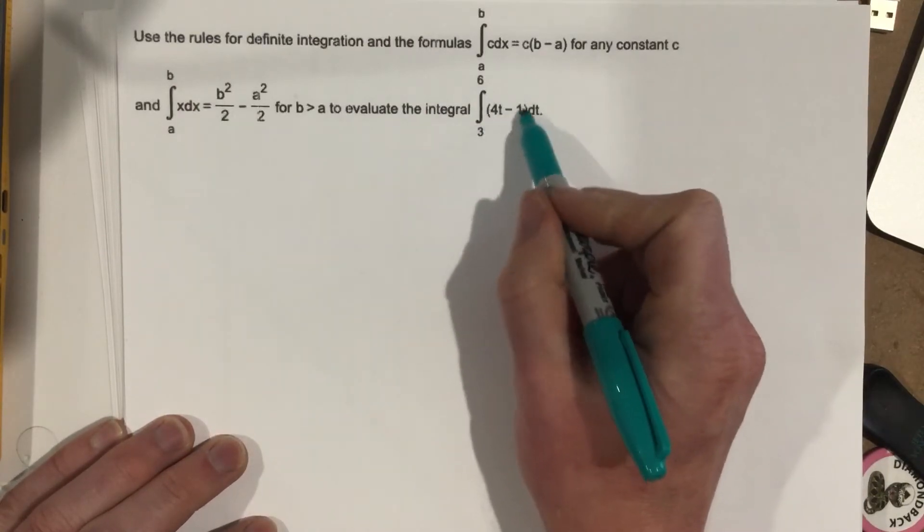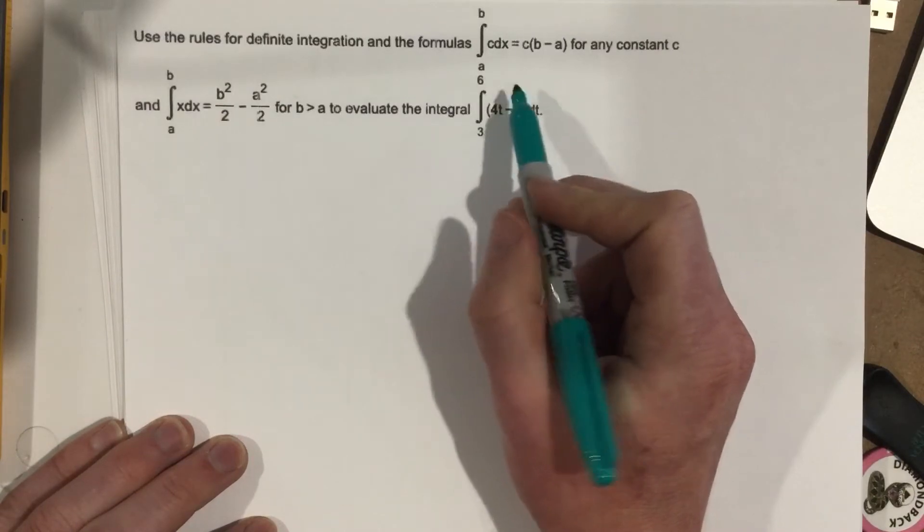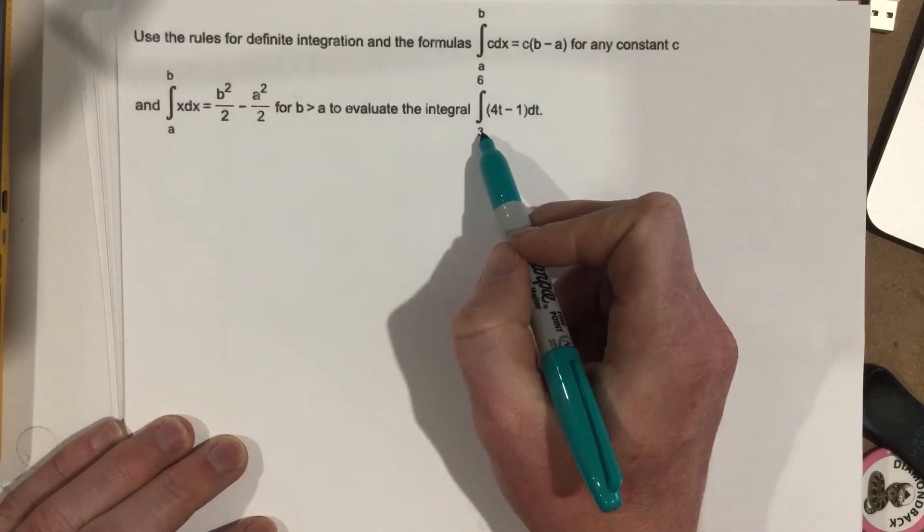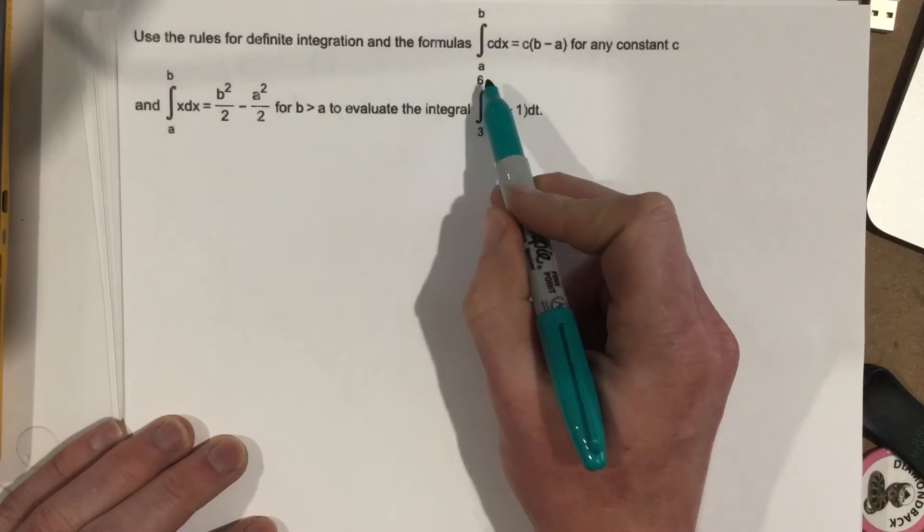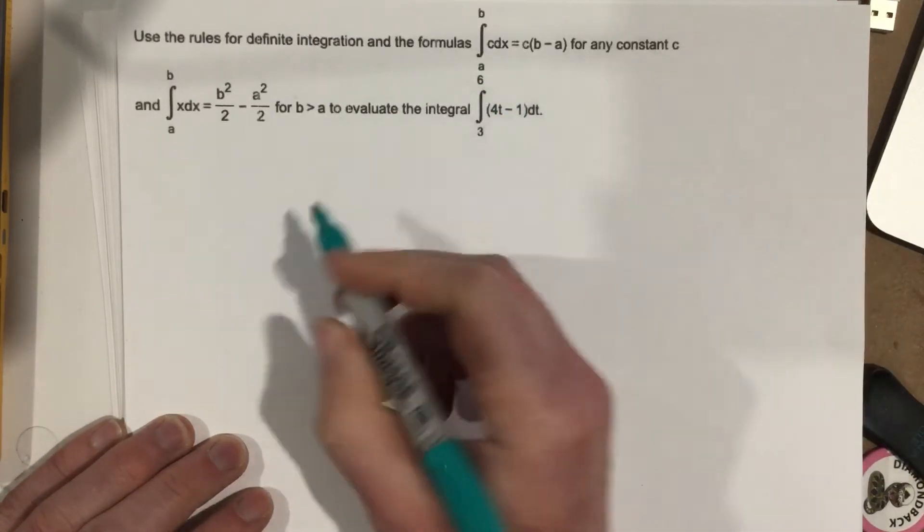Long story short, we're just going to do the antiderivative of what's in the inside, and then we're going to look at that from x values of 3 to 6, meaning we plug 6 in and we subtract out 3 plugged in. Let's look at it.